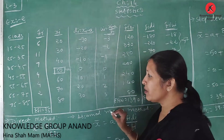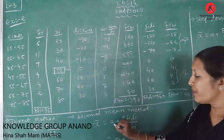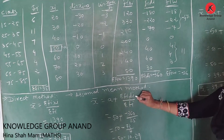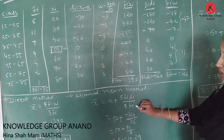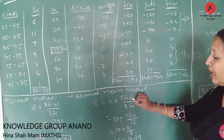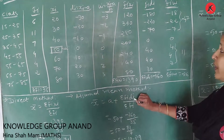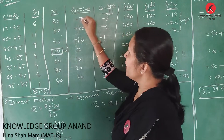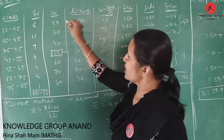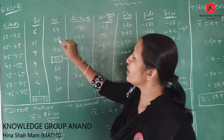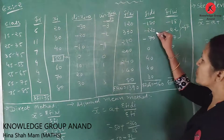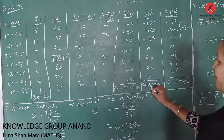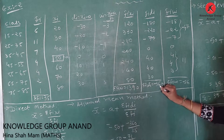For the assumed mean method, the formula is x̄ = a + Σfi·di / Σfi, with a = 50. We find fi × di: 6 × (-30) = -180, 11 × (-20) = -220, and so on. Σfi·di = -360.